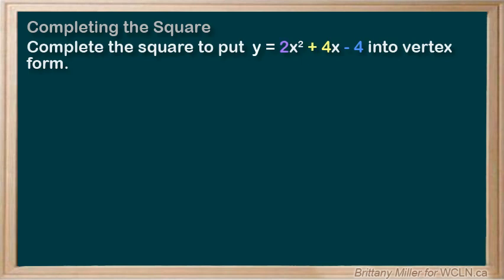Okay, one more. I need to show you what to do if a isn't 1. Consider 2x squared plus 4x minus 4. We're going to take that 2 out of the first part of our equation. So it becomes 2 times x squared plus 2x and then minus 4 on the end there.